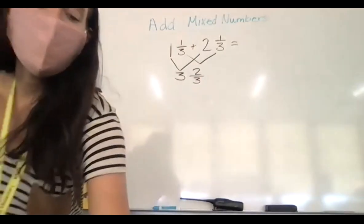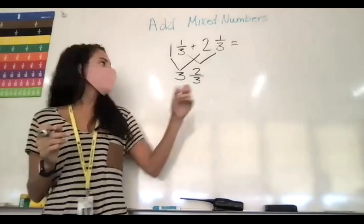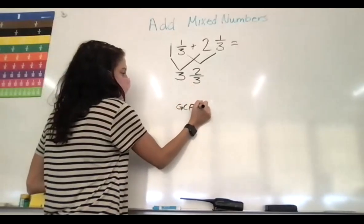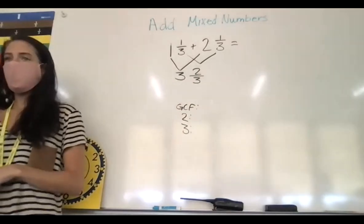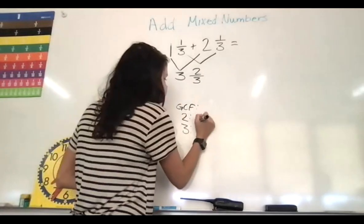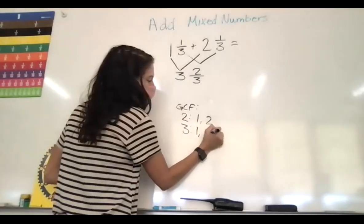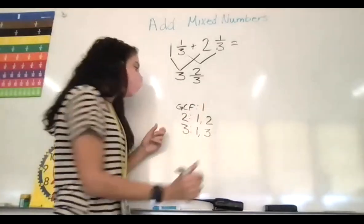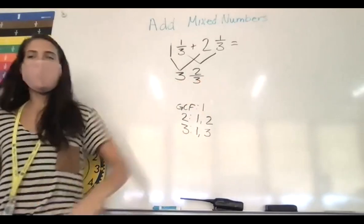But we want to see if our fraction is in simplest form. We have to find the greatest common factor of 2 and 3. The factors of 2 are 1 and 2; the factors of 3 are 1 and 3. So the greatest common factor is 1. Since the greatest common factor is 1, that's already in simplest form. So my answer is 3 and 2 thirds.